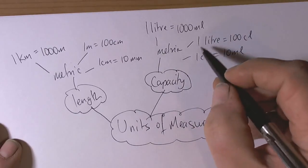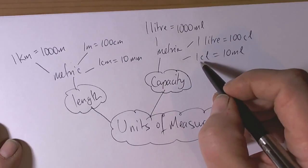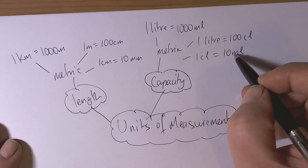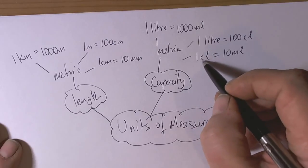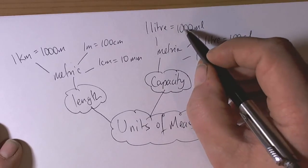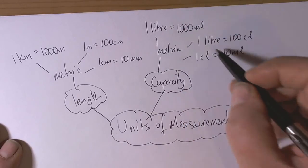Notice again the language: centi is hundredth, so there's a hundred of those in a litre. 100 centilitres in a litre. Milli is thousandth, so there's a thousand of those in a litre.